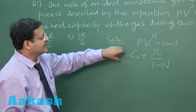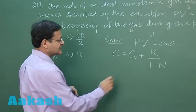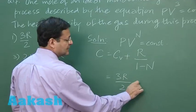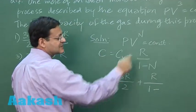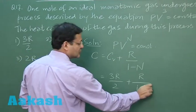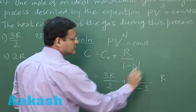Now you see CV for monatomic gas has the standard value 3R by 2, and this is plus R upon 1 minus N. N value if you compare has been given to be equal to 3, so this is equal to R.